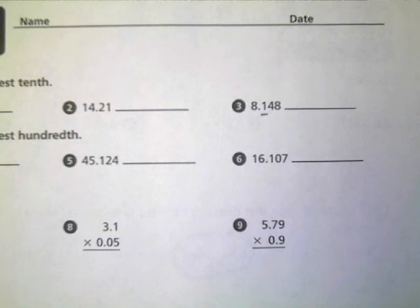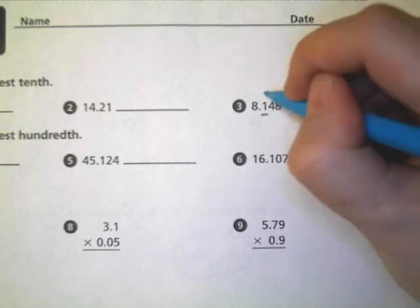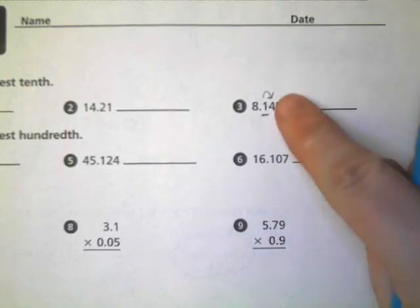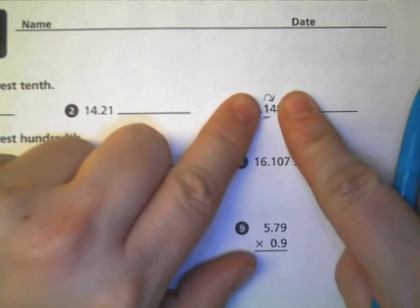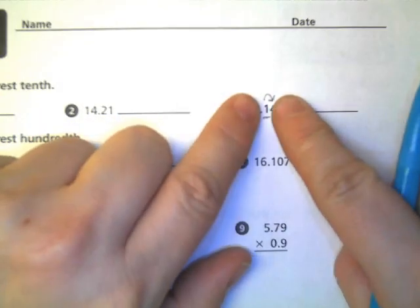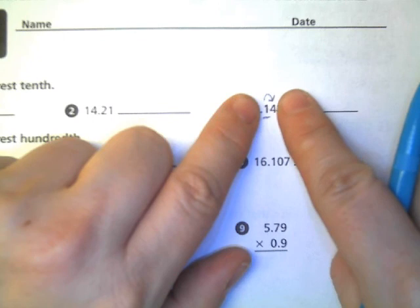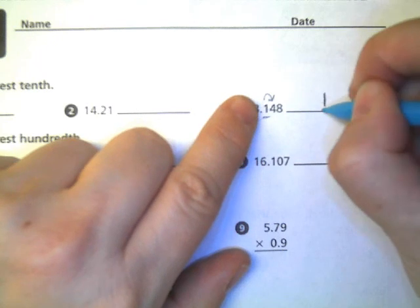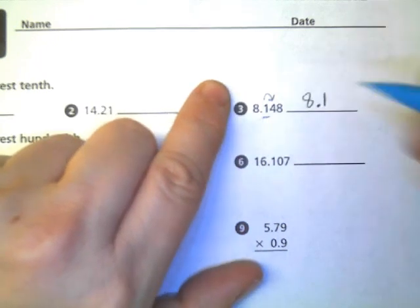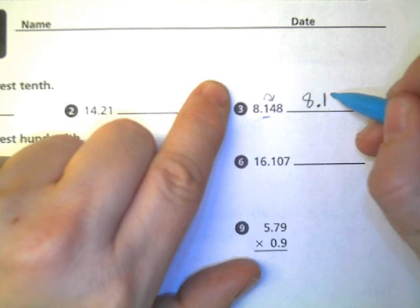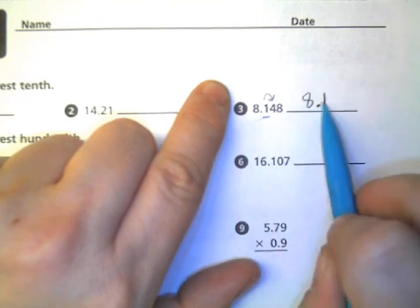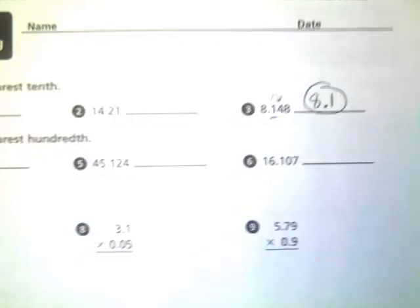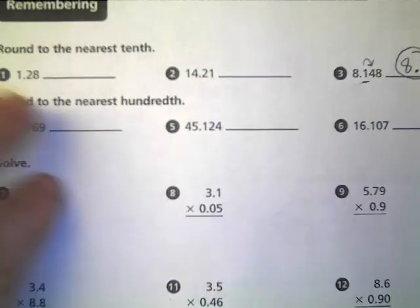So I underline the number that's in the tenths. That means that that number, the one, looks over at the four. So draw an arrow over to the four. And you don't even care. None of these other numbers matter right now. It's just the four telling the one what to do. Five or more, raise the score. Four or less, let it rest. So you let that one rest. Everything in front of it stays the same. So the decimal and the eight. Everything behind it either changes to zeros or drops off. Because this is a decimal, it just drops off. It's 8.1.